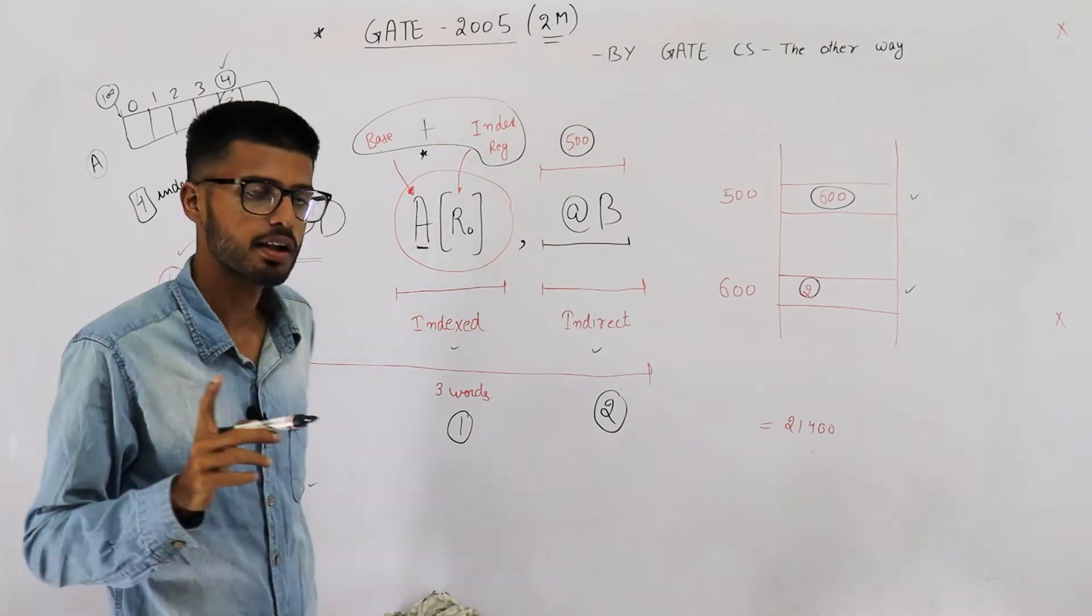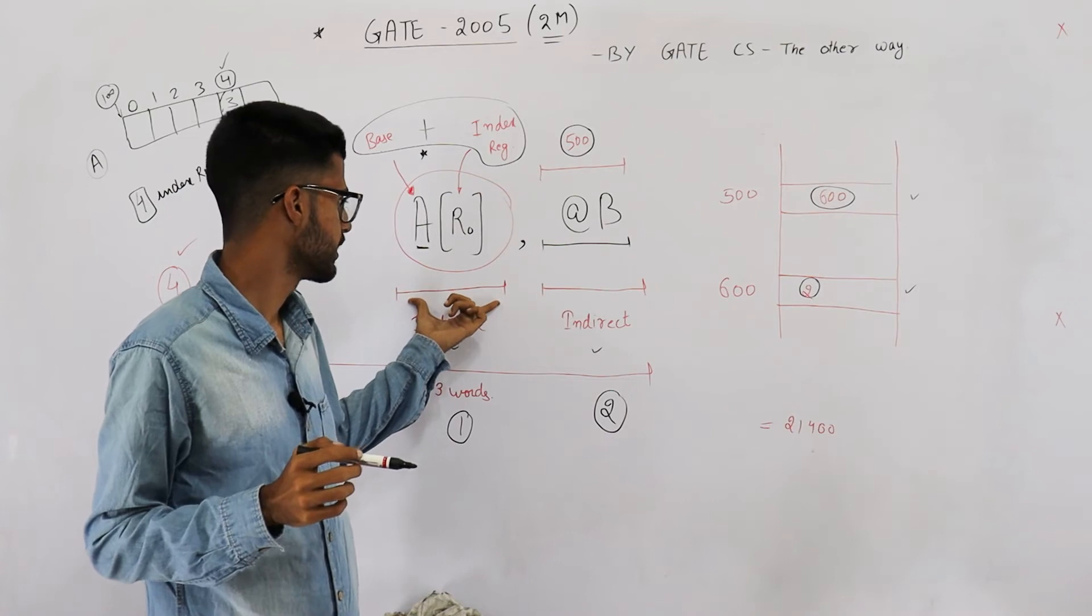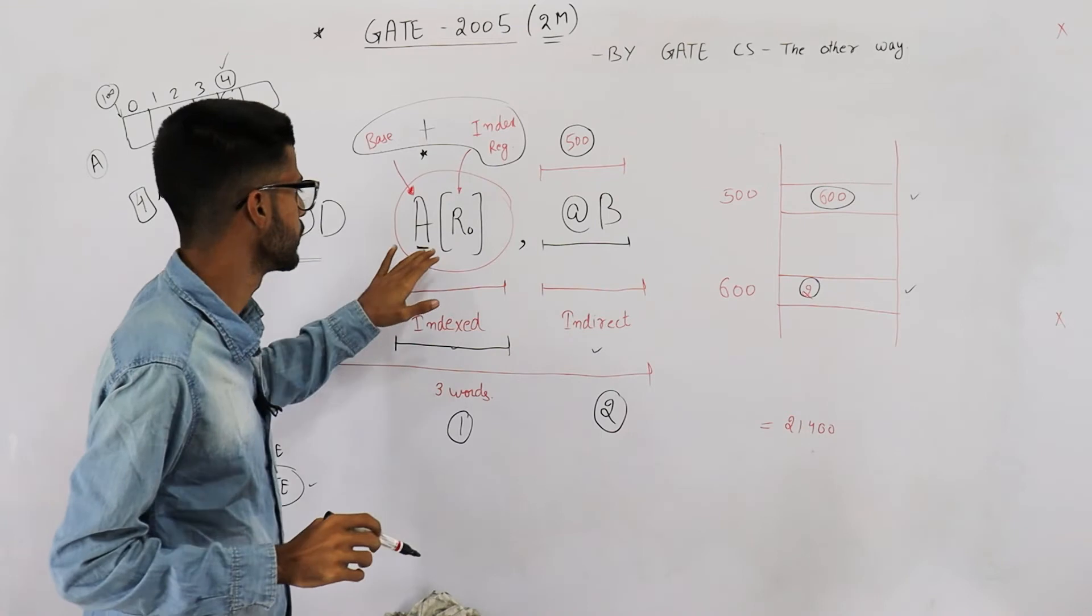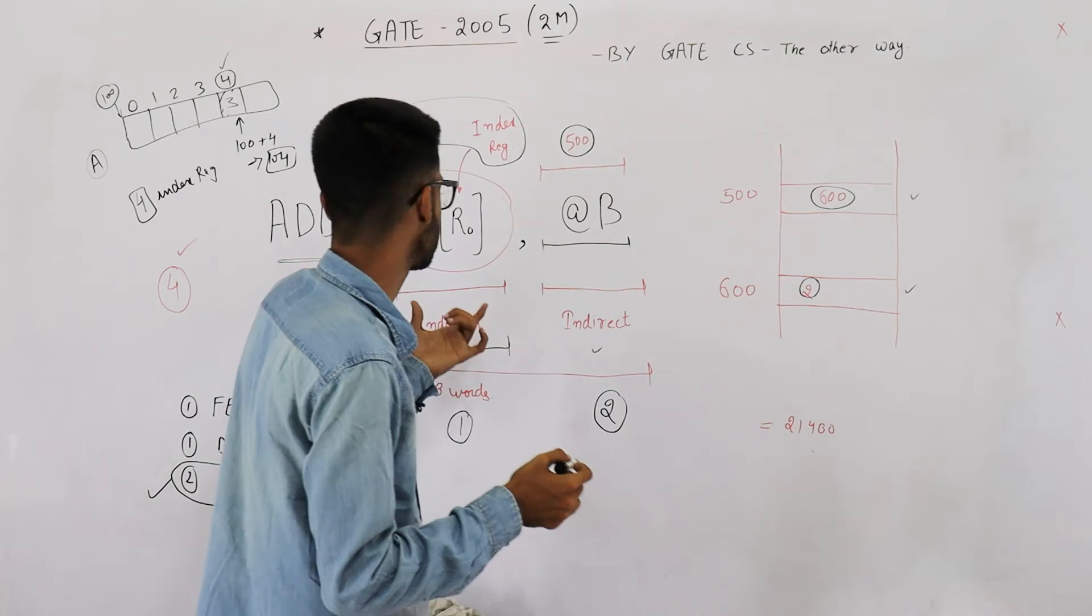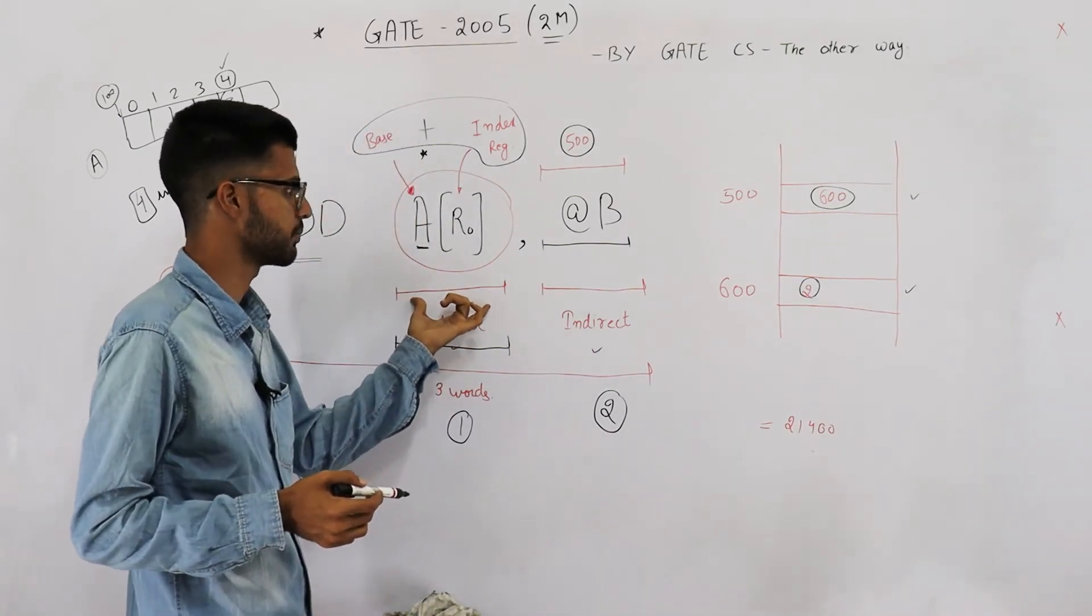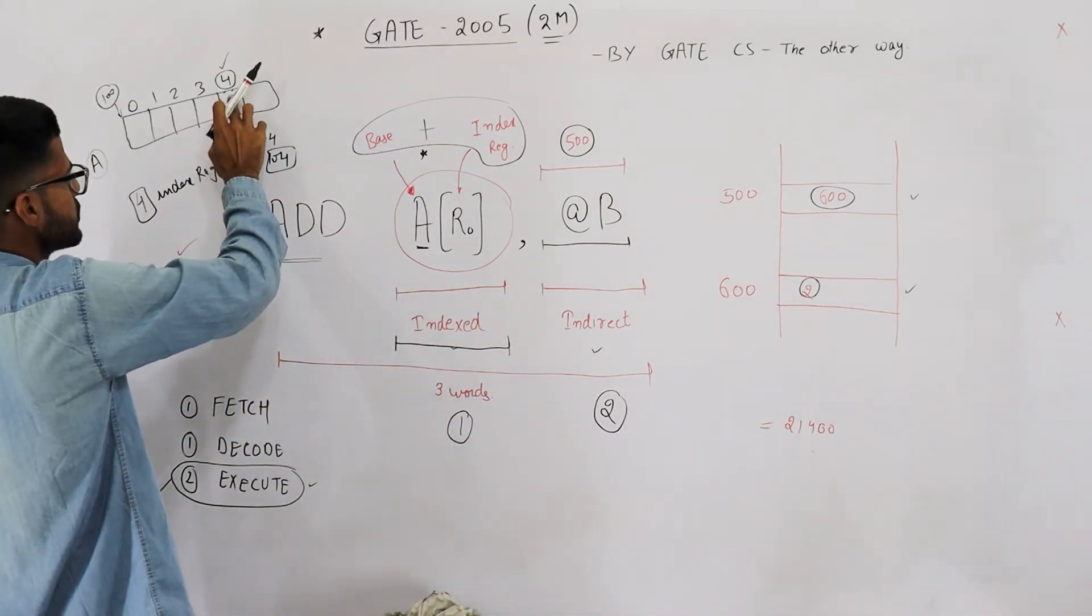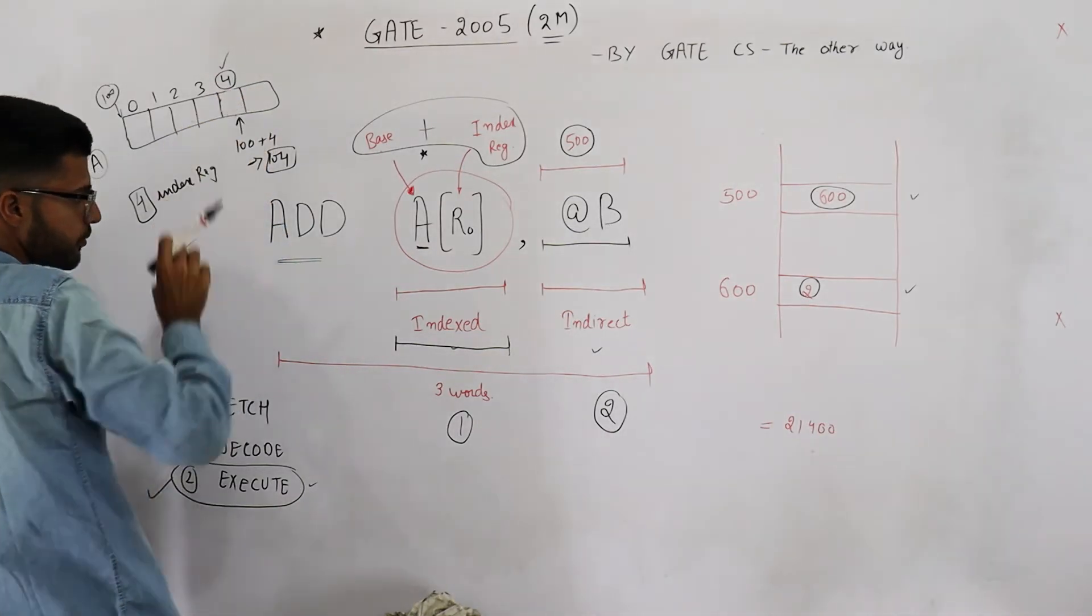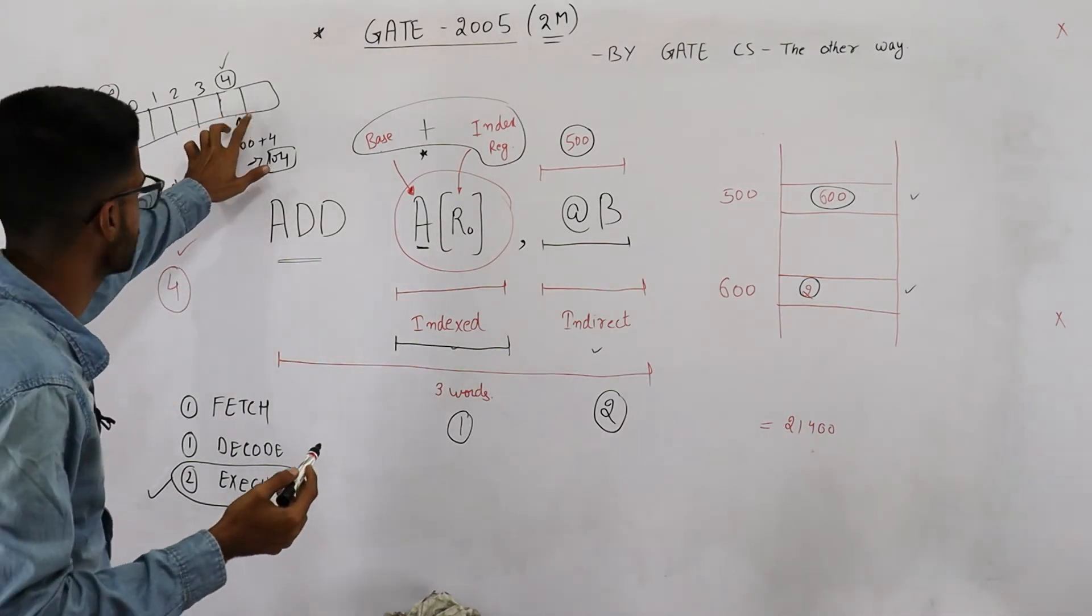Now according to the question, they have said that whatever is the result of this addition must be saved in this operand only. That means you need to access the memory again, this time for a write, because you want to write the result in this operand, in this memory location which is fourth element of the array according to our diagram. So you will be updating this element of the array, and here you are going to save 5.